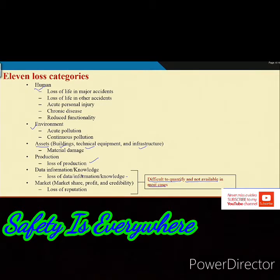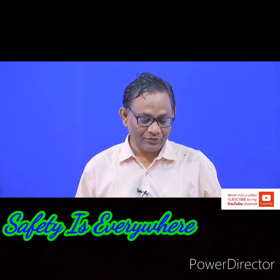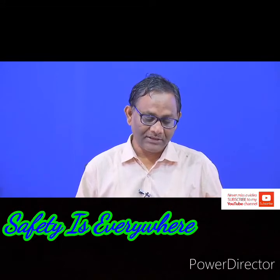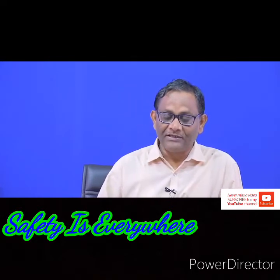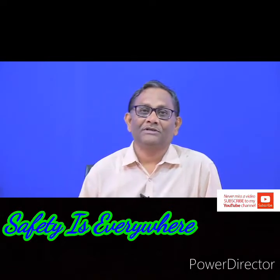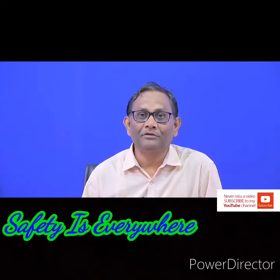When you do a case study on loss calculation and try to find out the budget for safety, if you do not consider all loss categories you may find the cost of accident is much less than it actually is. When calculating cost of accident, it is recommended to consider all 11 categories of losses, find ways and means to calculate each, aggregate or sum all those categories, and finally use the resultant loss for safety budgeting or cost-benefit analysis.